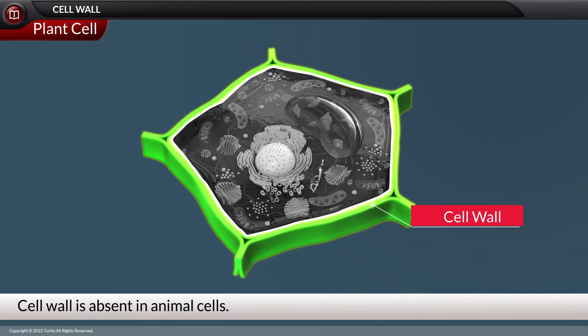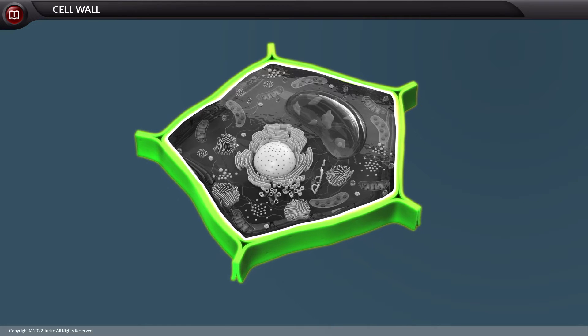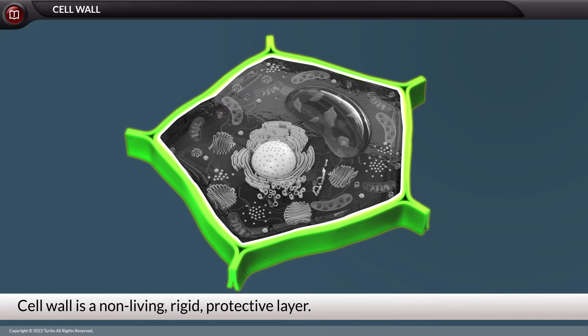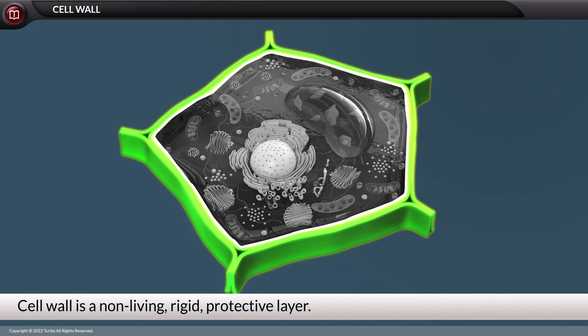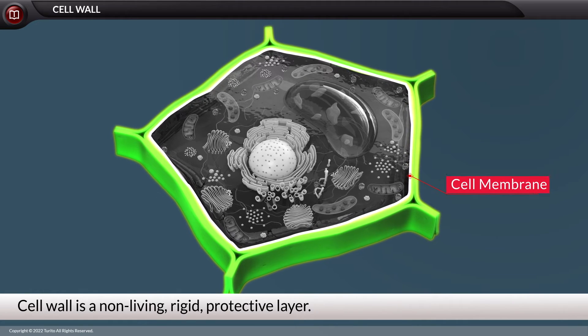Let us quickly go through the key points of the cell wall. The cell wall is a non-living, rigid, protective layer present external to the cell membrane.